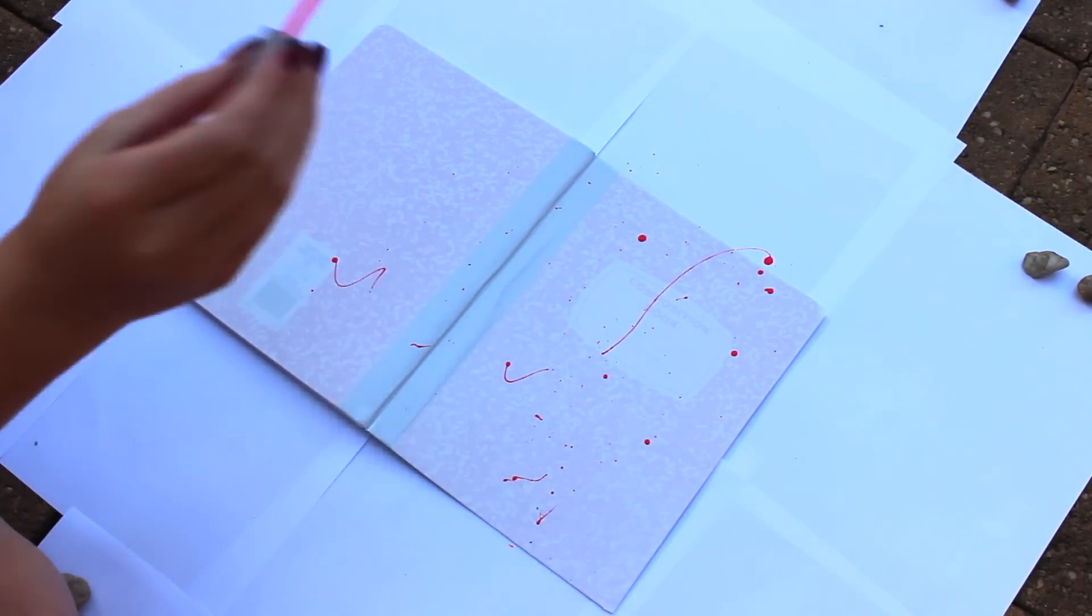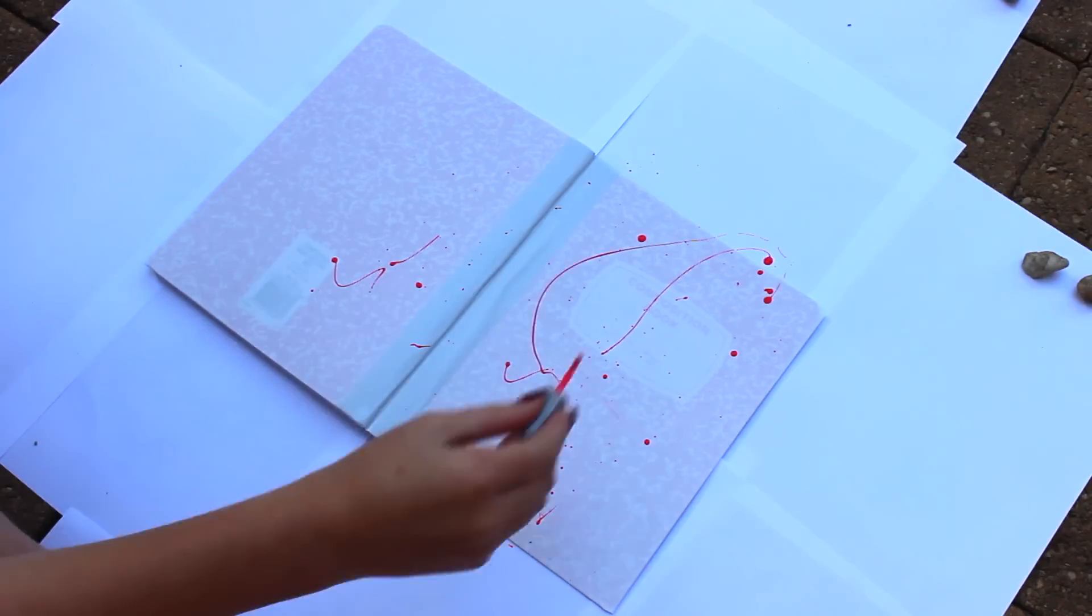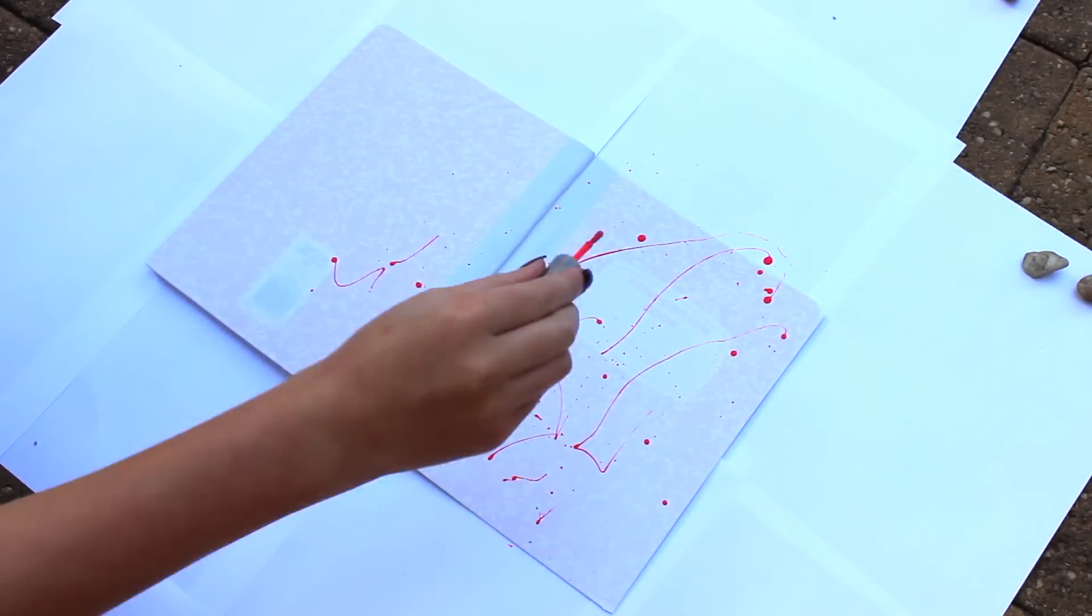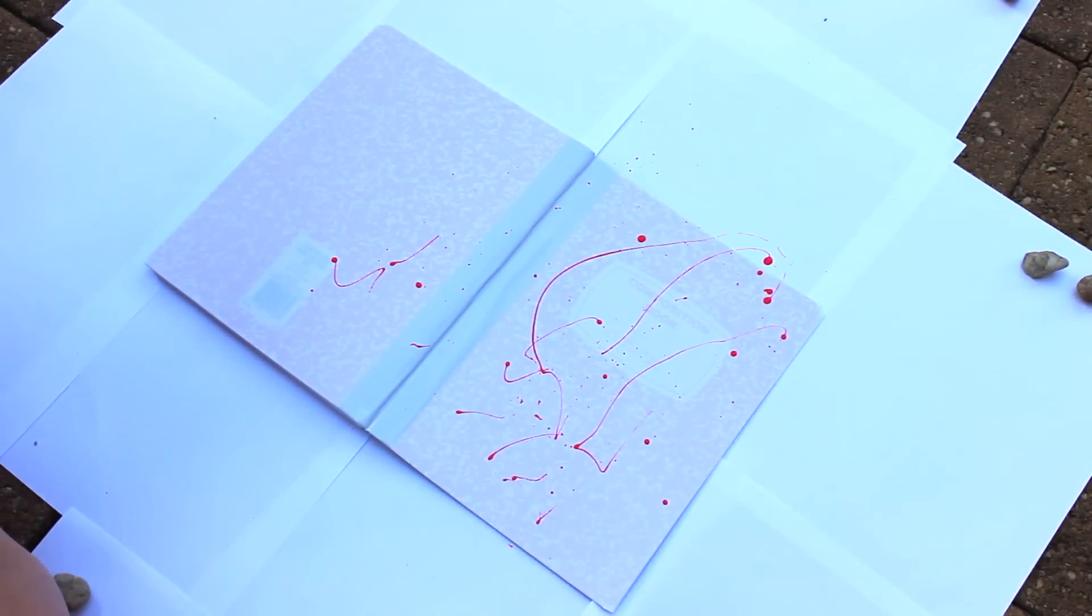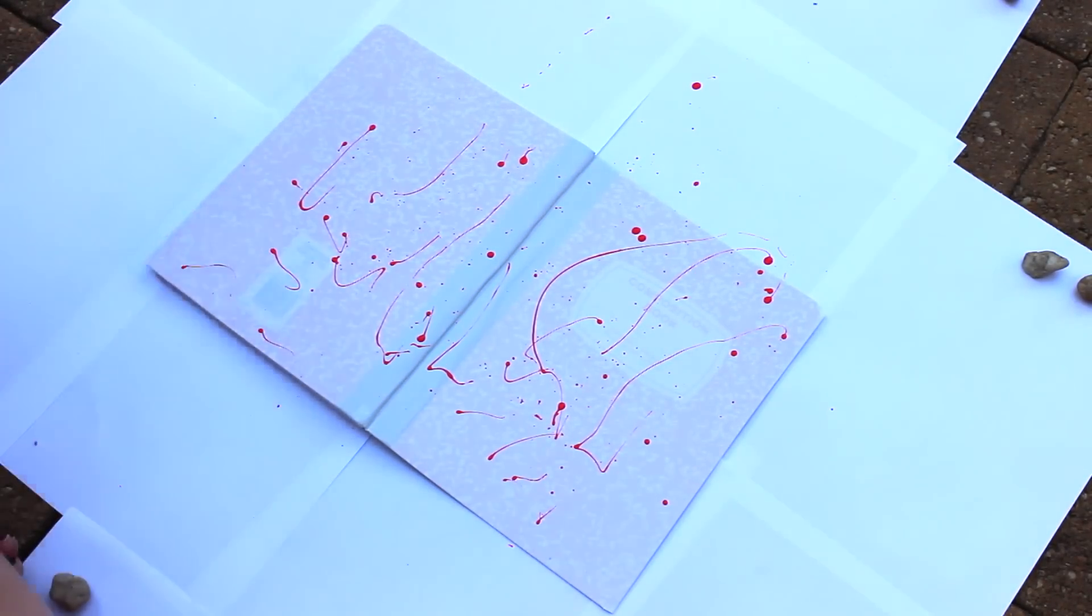So start taking your nail polish. I just chose three neon colors: a neon yellow, a neon green, and a neon pink, and I started splatting it all over it. I got this idea by watching a nail art video on Instagram. I just saw someone splattering the nail polish and I'm like, oh my god, I could do that on a book.